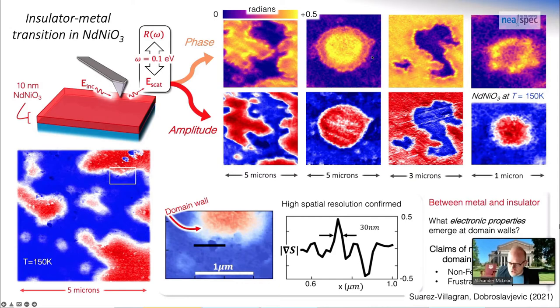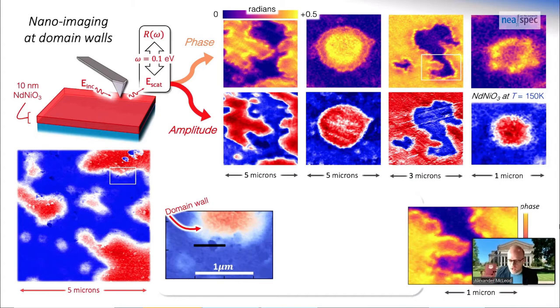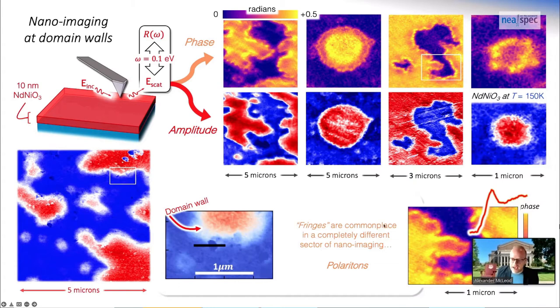Although that seems rather dichotomous, in the near-field phase we see a host of more subtle and interesting phenomenologies. In particular, if we look very close to one of these insulator metal boundaries, we can see what I'm going to call a fringe in the near-field phase. This is somewhat anomalous, but in a different context of nanoimaging these fringes are rather commonplace.